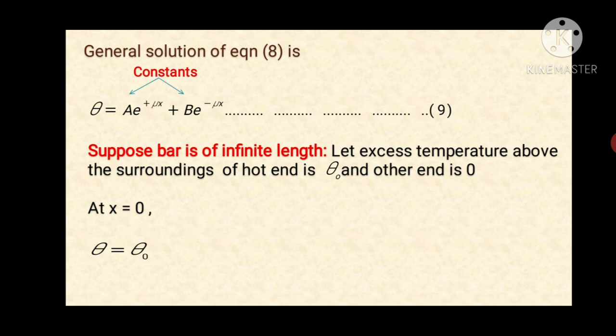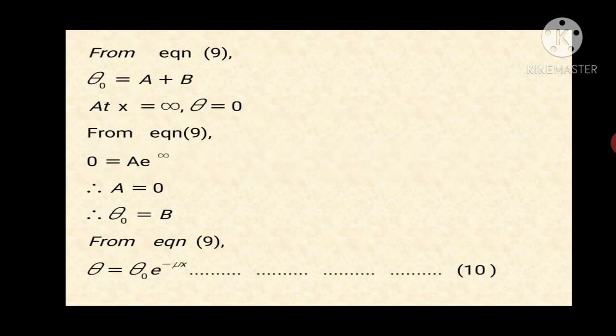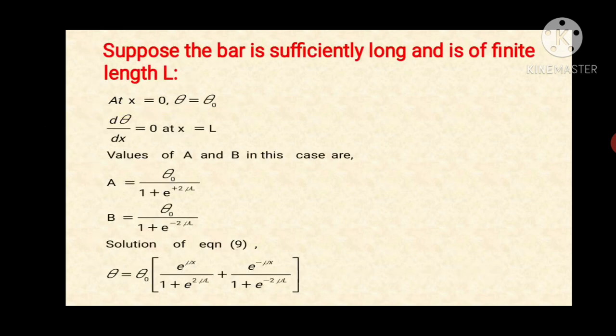Now suppose the bar is of infinite length. Let the excess temperature at the hot end above the surrounding be θ₀, and at the other end be zero. So at x=0, θ = θ₀. From equation nine, at x=∞, θ=0, so 0 = A·e^(∞), which means A must be zero. Therefore θ₀ = B, and from equation nine we get θ = θ₀·e^(−μx), equation ten.